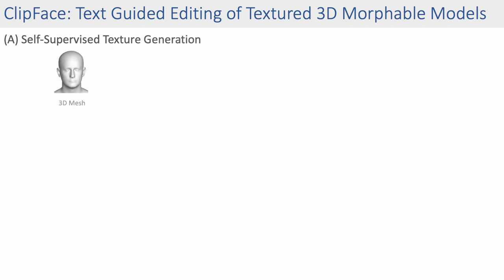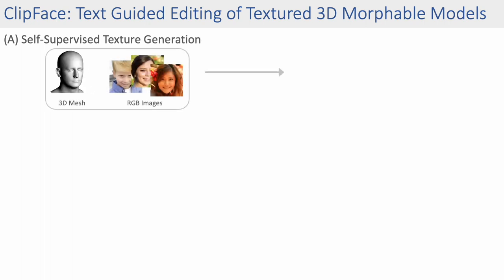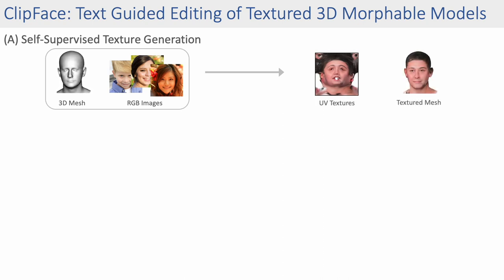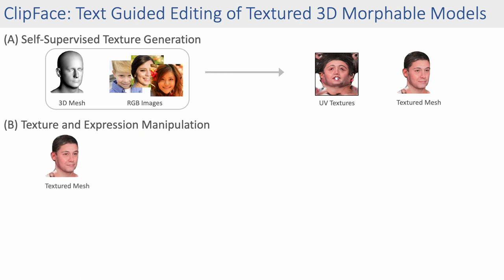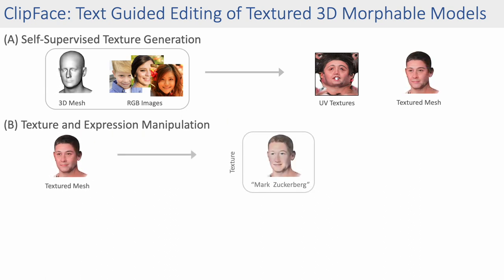Given a 3D morphable face model and RGB images of human faces, we generate texture maps that can then be applied to the face geometry. We then use this textured mesh as our starting point to generate a variety of textures and expressions.